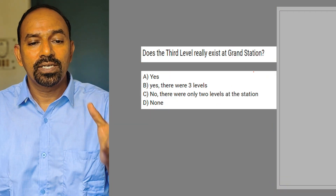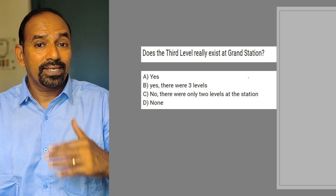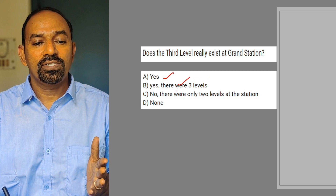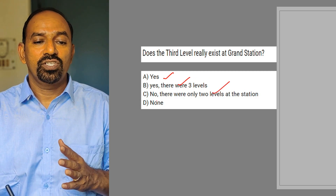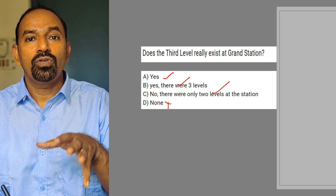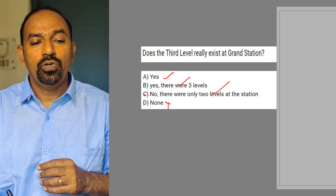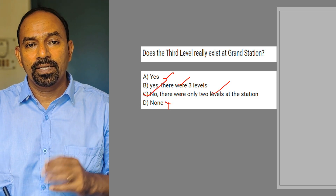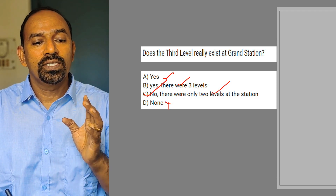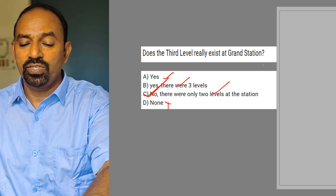Next question: Does the third level really exist at Grand Central Station? Options: yes; yes, there were three levels; no, there were only two levels at the station; none. Considering the facts about Grand Central Station, only two levels are there. The third level is only a fictional level. So the answer is: no, there were only two levels at the station.